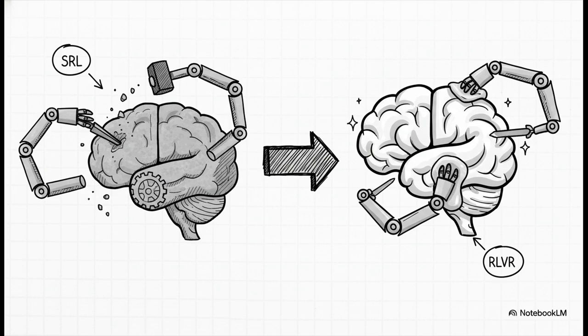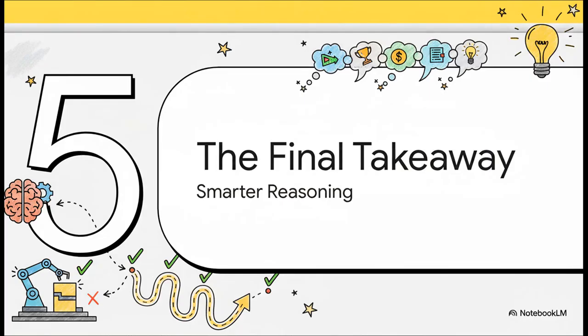Then, RLVR comes in at the end to fine-tune everything and give that final answer pinpoint precision. It's like a one-two punch for creating these incredibly capable AI systems. So, where does that leave us? What's the big takeaway from this quiet, but maybe incredibly important, breakthrough?